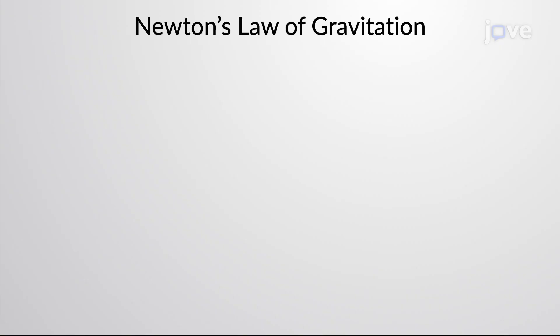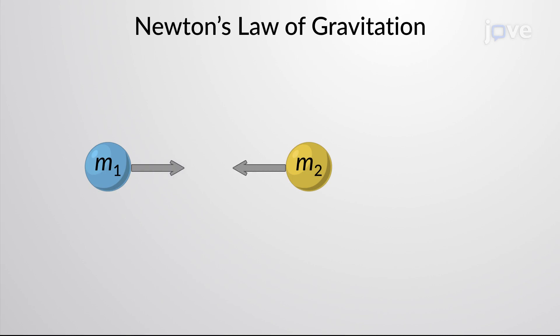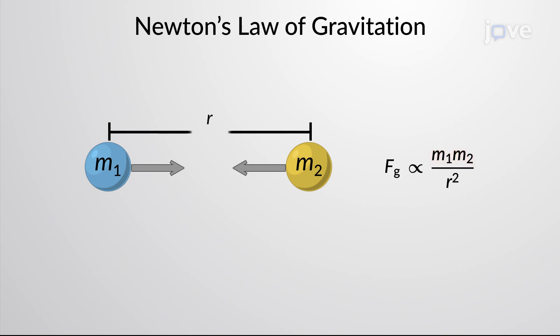Newton's law of gravitation states that every particle of matter in the universe attracts every other particle with a force that is directly proportional to the product of the masses of the particles and inversely proportional to the square of the distance between them.